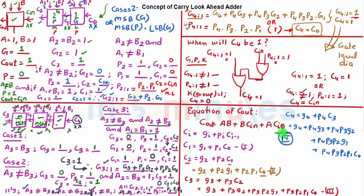Now what do we know? Look at equation 4. Do you think there is a similarity? Yes, if you look till here: G4, P4 G3, P4 P3 G2. This is equal to G4:1.